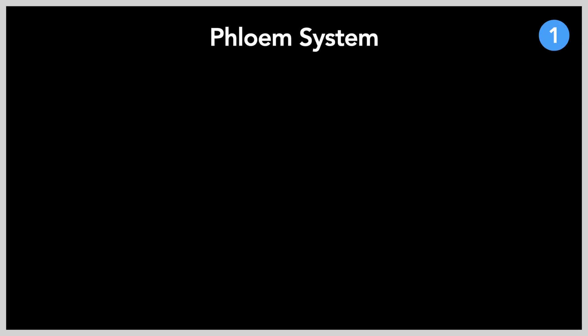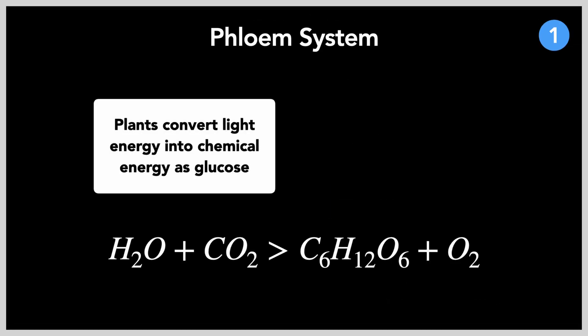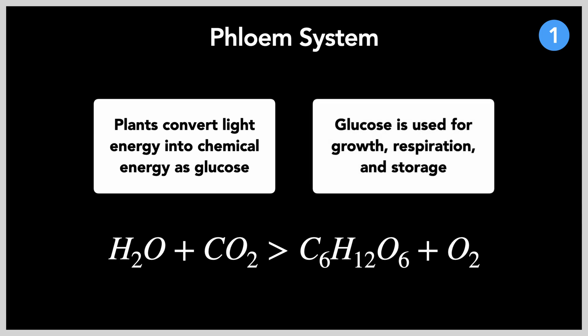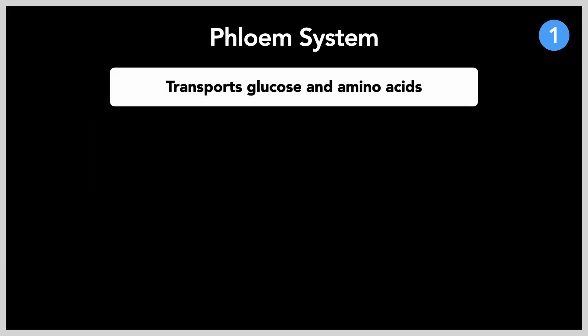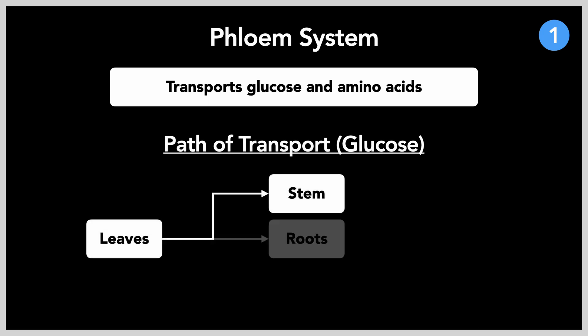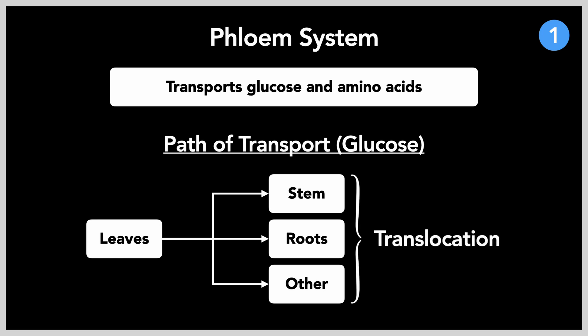Plants convert light energy into chemical energy in the form of glucose by process of photosynthesis. Growth, respiration, and storage are among the multitude of processes plants use glucose for. The phloem transports this sugar along with derived amino acids dissolved in water from the leaves to the stem, roots, and the other parts of the plant. Hence, the transport of substances through the phloem is called translocation.